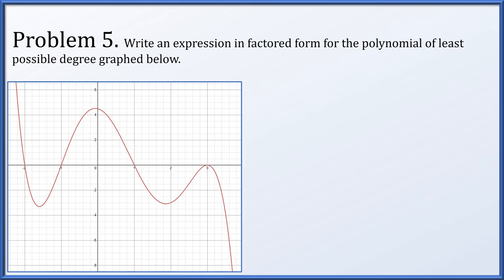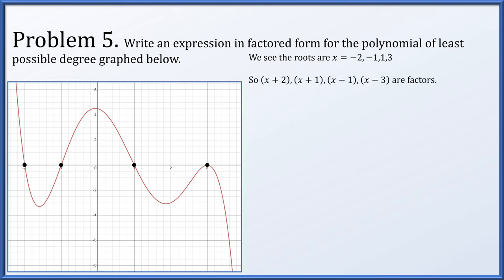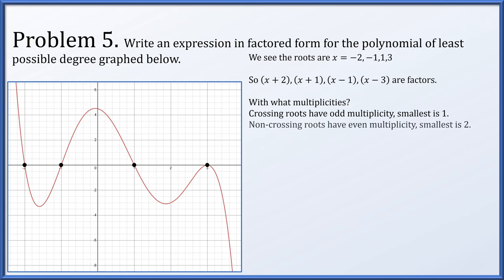Very similar to the previous problem, we want to write an expression in factored form for the polynomial whose graph is given. We see roots at negative 2, negative 1, positive 1, and 3. So (x plus 2), (x plus 1), (x minus 1), and (x minus 3) are all factors. Crossing roots have odd multiplicity — we'll use the smallest, which is multiplicity 1.